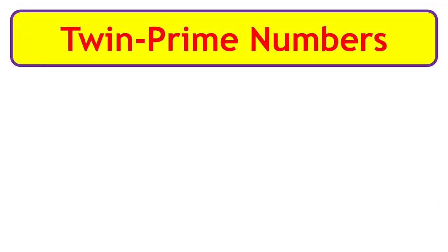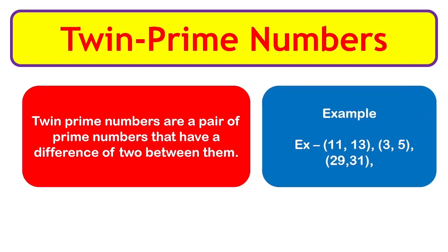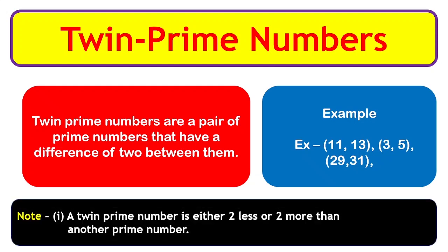Twin prime numbers: twin prime numbers are a pair of prime numbers that have a difference of 2 between them. Examples: 11 and 13, 3 and 5, 29 and 31 — all these pairs have a difference of 2. Note: a twin prime number is either two less or two more than another prime number. For example, 11 is two less than 13, and 13 is two more than 11.